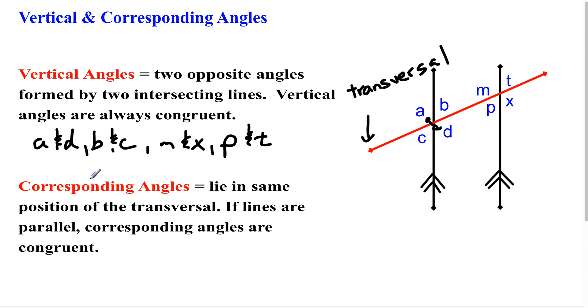Also, we have this idea of what we call corresponding angles. And they lie in the same position of the transversal. So what does that mean here? Let me go ahead and erase what we have here. I'm going to go ahead and erase this one here. All right. So if I went back here and I said, well, what do I mean by in the same position?